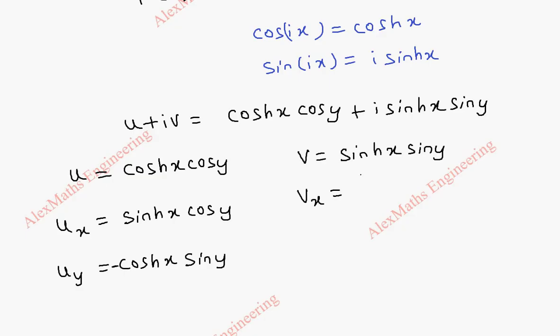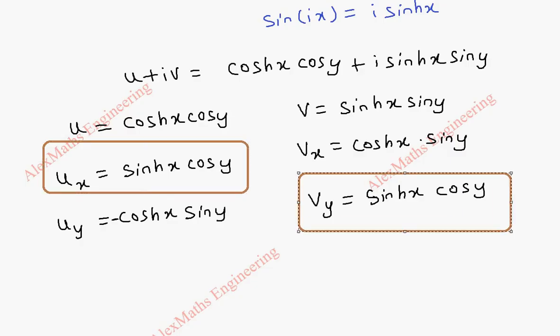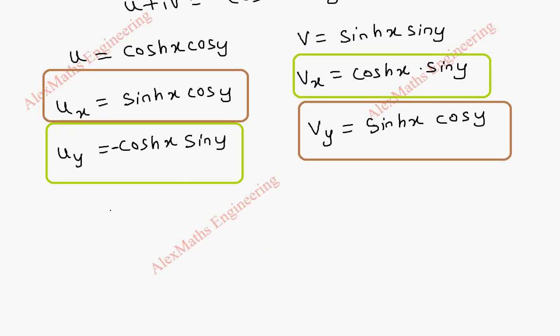In the same way, vx, sinh x becomes cosh x. And sin y is a constant, which is kept as it is. And vy becomes sinh x is a constant, which is kept as it is. Sin y becomes cos y. Now, we notice from this, ux is equal to vy. Both are sinh x into cos y. And again, we also notice, uy is minus times of vx. Both are same term. That is cosh x into sin y. But they are of opposite sign.